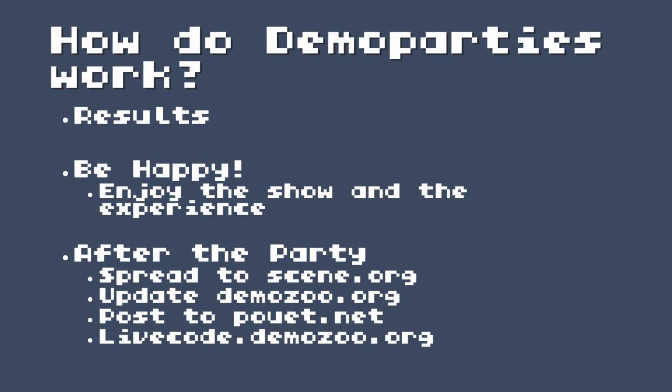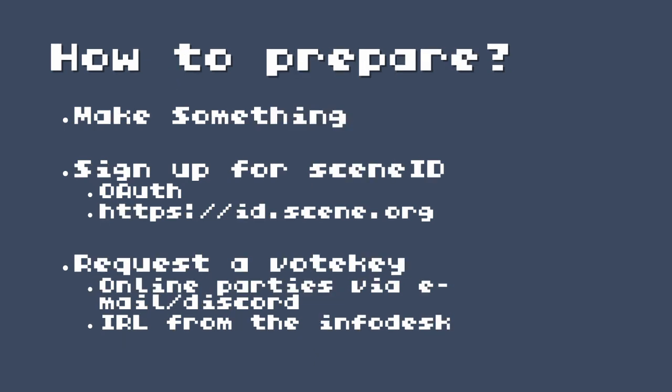What happens after the party? Your releases will be spread to scene.org for archiving. The tireless volunteers at demozoo.org will probably have the entries and results updated, and you can add more information there - screenshots, links to your YouTube videos, etc. Post it to pouet.net, which is another online website for archiving demos and productions. Anyone can add them, but generally it's on the person who made it to do so. Any live code that happened will hopefully be added to livecode.demozoo.org.